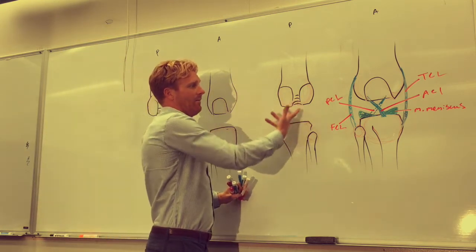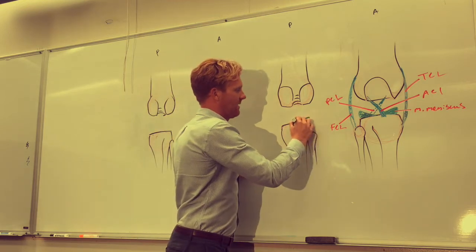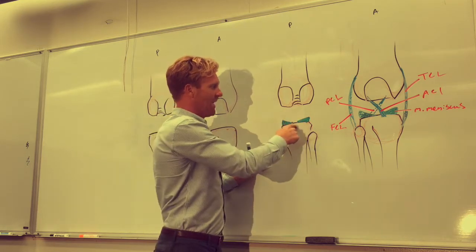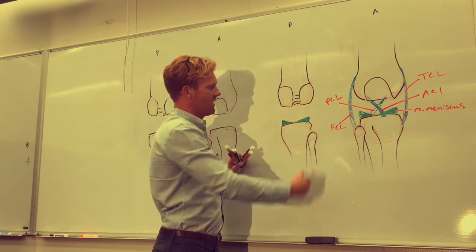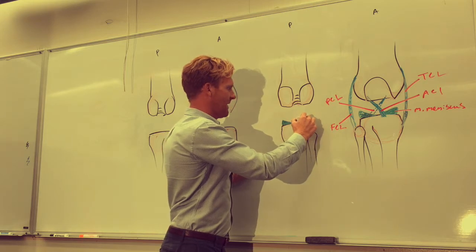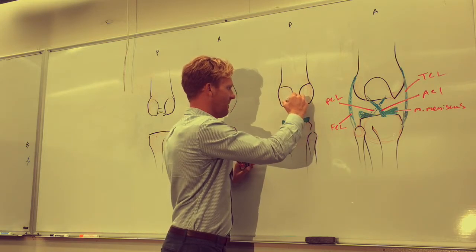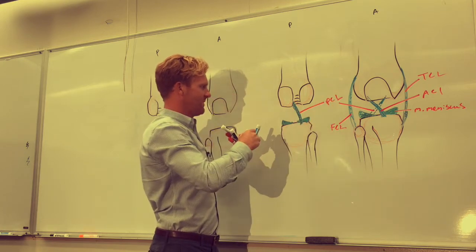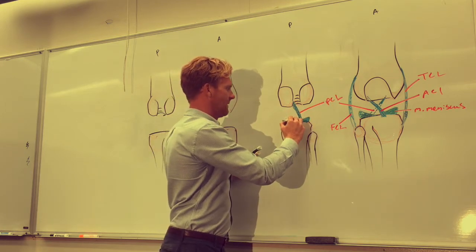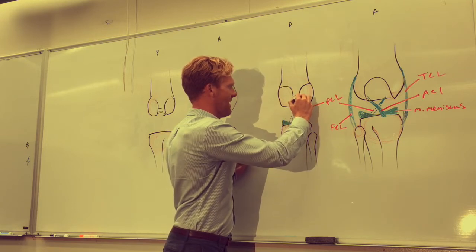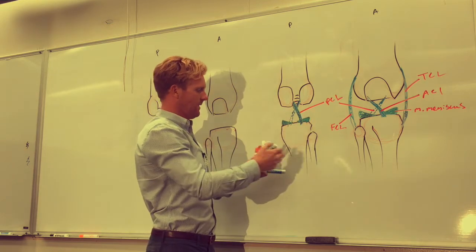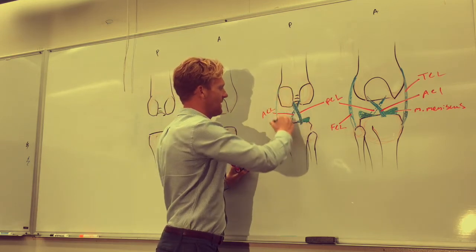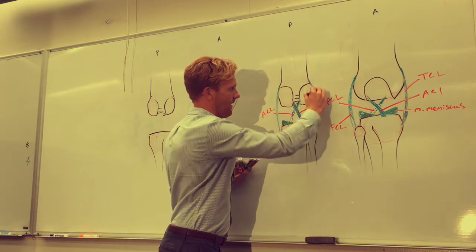Looking at the posterior view of the same knee, we still have the two menisci. From this view, the PCL would start on the lateral side and stretch to insert posteriorly, while the ACL would start at the front and extend backwards to insert on the femur. We would still have the two collateral ligaments on either side, stretching from the femur down to the tibia and fibula respectively.